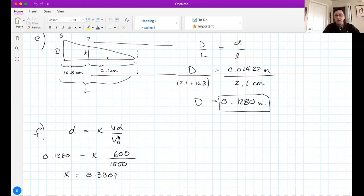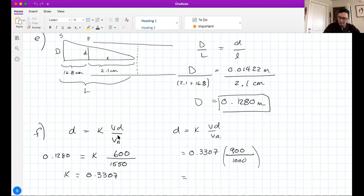Let's use that K with the new deflecting and new accelerating. D equals K times VD over VA. The new K is 0.3307. The new deflecting according to the question is 900, and the new accelerating is 1000. Run that math and I get 0.2976 meters of deflection with those new values.